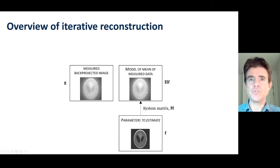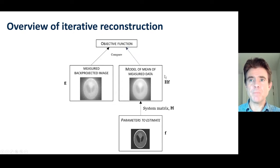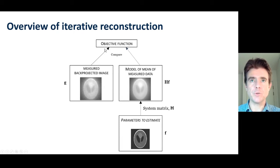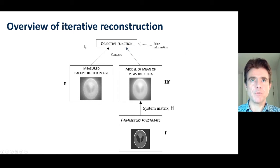This forward model needs to predict what the mean of the data would look like — given an estimate of the object representation parameters f, find what the corresponding mean is. Then we compare that mean to the actual noisy measurement using a cost function, a loss function, or an objective function. We can also inject prior information here, and in later lectures we'll get on to advanced methods for the prior information.